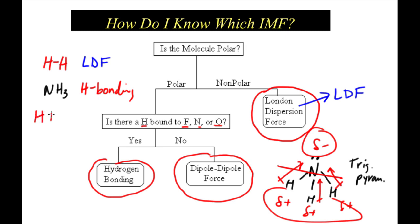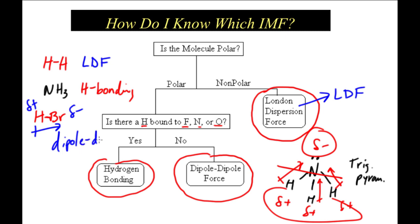If we have something like HBr — hydrogen bonded to bromine — there's going to be a difference in electronegativities. Electrons are being pulled towards the bromine, so you get a partial negative on the bromine and a partial positive on the hydrogen. So I have a polar molecule. The question is: is there hydrogen bonded to oxygen, nitrogen, or fluorine? No. Therefore, this is a dipole-dipole intermolecular force.